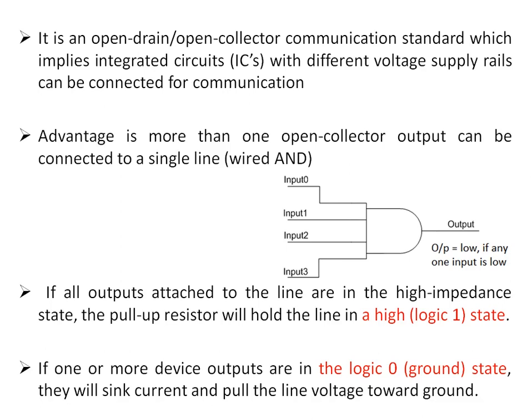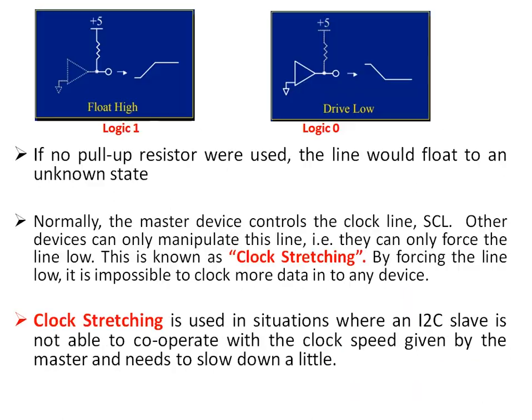Another advantage of the open collector is that all devices can be connected in a wired-AND fashion. If any of the inputs — input 0 to input 3 — is low, the output is low. If all device outputs connected to the line are in high-impedance state, the pull-up resistor holds the line at logic one. If one or more device outputs are at logic zero, they sink current and pull the line to ground.